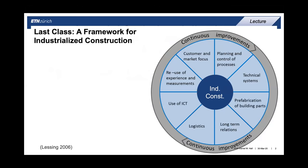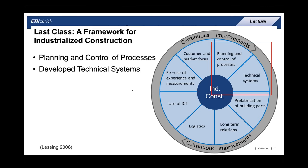Last class we talked about the framework for industrialized construction — the nine areas on the wheel, with the idea that we need continuous improvements all around. We talked about how none of these individual areas are that new or novel, but industrialized construction repackages them into a holistic mindset that is unique and different from traditional architecture, engineering, and construction.